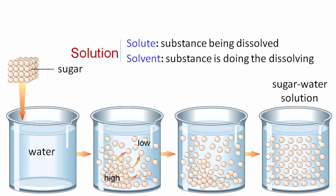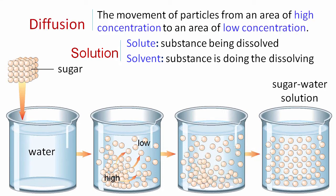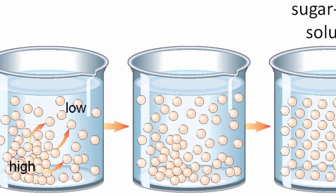The resulting solution reaches an even distribution point called equilibrium. The process just described is overall called diffusion, the movement of particles from an area of high concentration to an area of lower concentration. In short, it can be said that sugar molecules are diffusing down their concentration gradient from high concentration to low concentration until they reach equilibrium.